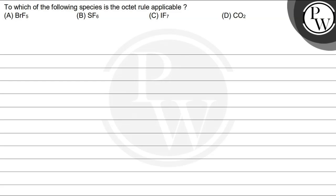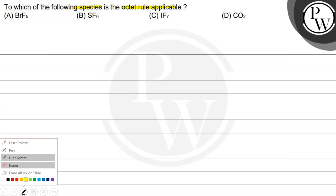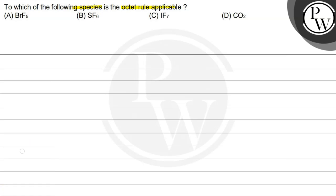Let's read the question. The question says: to which of the following species is the octet rule applicable? Option A: BrF5. Option B: SF6. Option C: IF7. Option D: CO2.